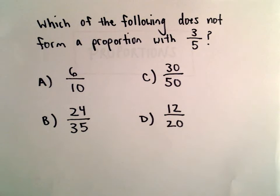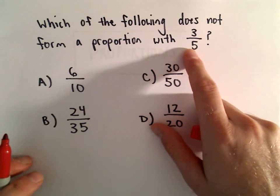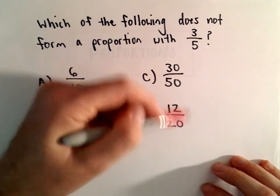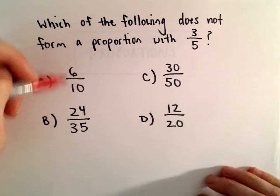Well, there's a couple different ways to really think about this. Notice 3 fifths is in reduced form, so another thing we could do is just reduce these other fractions and see if you get 3 over 5 at the end.